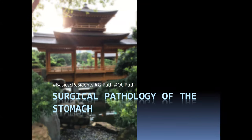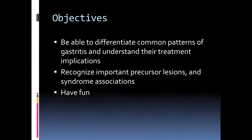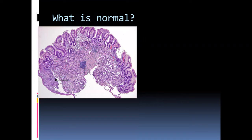Hello and welcome. We're going to talk for a few minutes about some of the benign entities that pop up in the stomach and that we encounter in our GI surgical pathology service. I will focus on the benign entities this time; we'll come back and visit malignancies at another stage. Our key objectives today are to help you differentiate the common patterns of gastritis, understand treatment implications, recognize important precursor lesions and their syndrome associations, and most of all have some fun. So let's begin and talk about what constitutes normal.